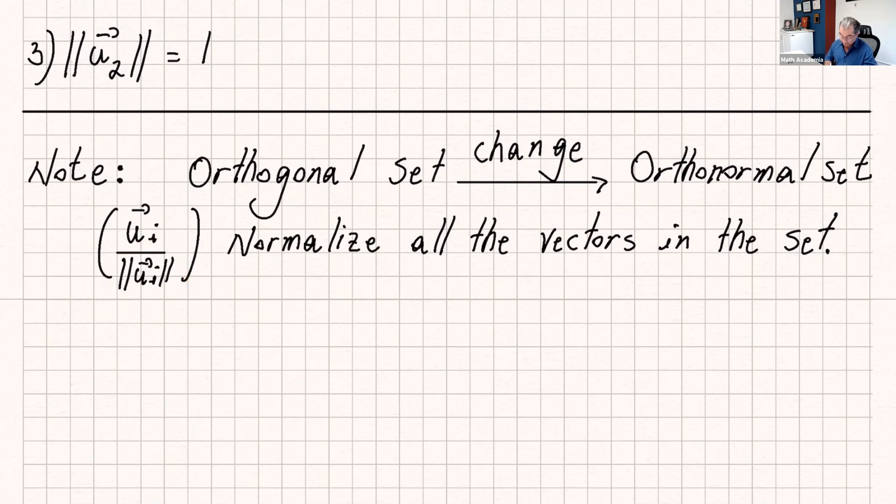You do that for all the vectors in the set and that way an orthogonal set becomes an orthonormal set. Please know the difference between orthogonal and orthonormal, and how we can go from an orthogonal set to an orthonormal set. Because later on when we do Gram-Schmidt algorithm, we're going to use this a lot. That's good enough. This is a short lecture, but I do want you to know the definition until we do our next lecture. Thank you and have a good one, everyone.